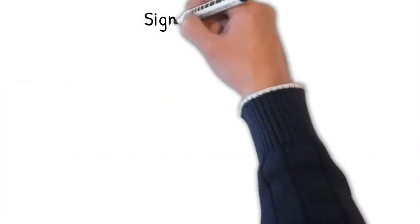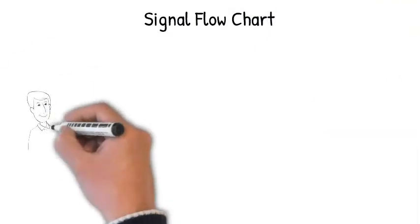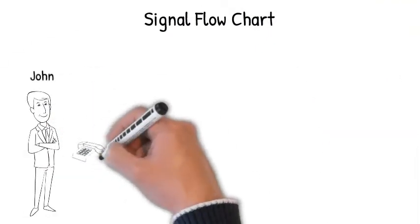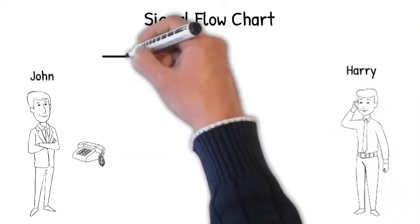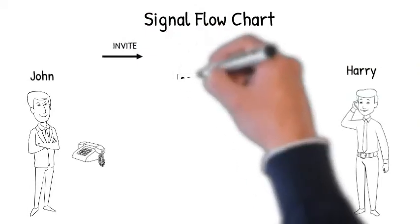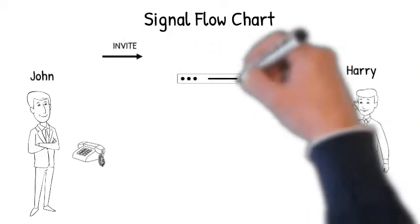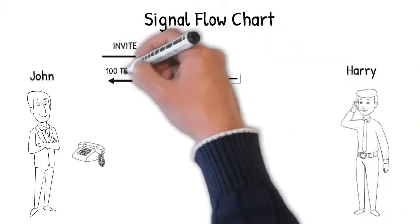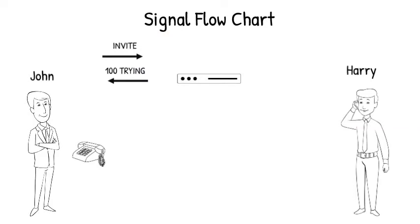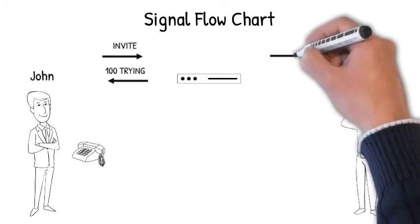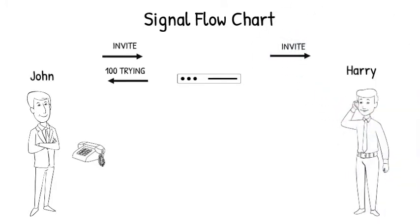Let us see the basic signal flow when a call is initiated. John dials Harry's extension number. John's phone sends an INVITE signal to the SIP server. The SIP server sends a 100 Trying response immediately to John's phone to stop retransmissions of the INVITE request. The SIP server then searches the address of Harry, and after getting the address, it forwards the INVITE request further.